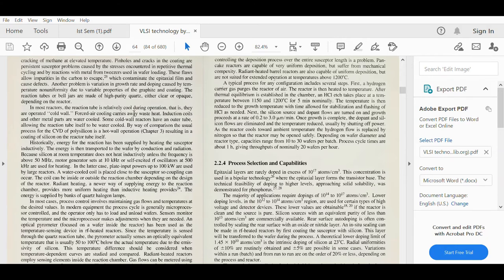In most reactors, the reaction tube is relatively cool during operation, that is, they are operated cold wall. Forced air cooling carries any waste heat. Induction coils and other metal parts are water cooled. Some cold wall reactors have an outer tube allowing the reaction tube itself to be water cooled. By way of comparison, the usual process of CVD of polysilicon is in a hot wall operation.